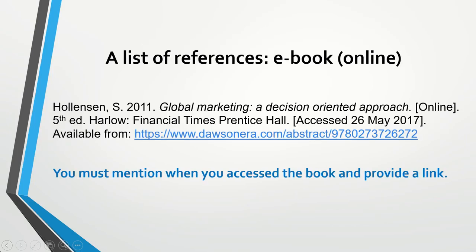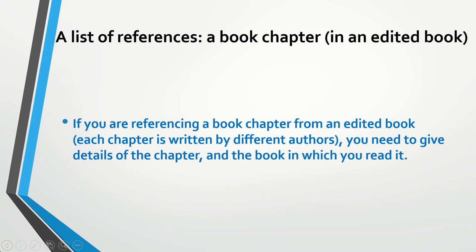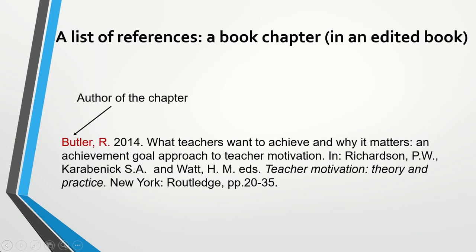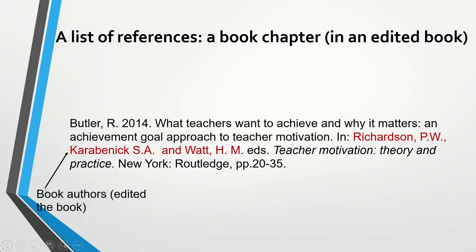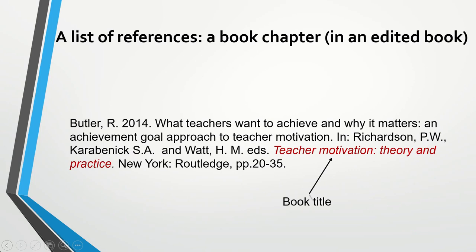If you refer to an e-book — a book you have read online — in addition to all the information mentioned before, you need to provide the date when you accessed the book and the link. If you are referencing a book chapter from an edited book, which is a book where each chapter is written by different authors, you need to give details of the chapter and the book it appears in: the author of the chapter, year of publication, chapter title, book editors, book title, place of publication, publisher, and chapter page numbers.